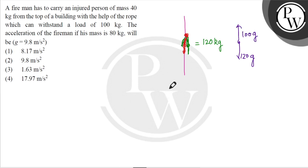So net downward force will be 120 g minus 100 g equals mass into acceleration, that is 120 into acceleration a. So that becomes 20 g equals 120 a, meaning acceleration value will be g upon 6, that is 9.8 divided by 6, which equals 1.63 meter per second square, which is option number 3.